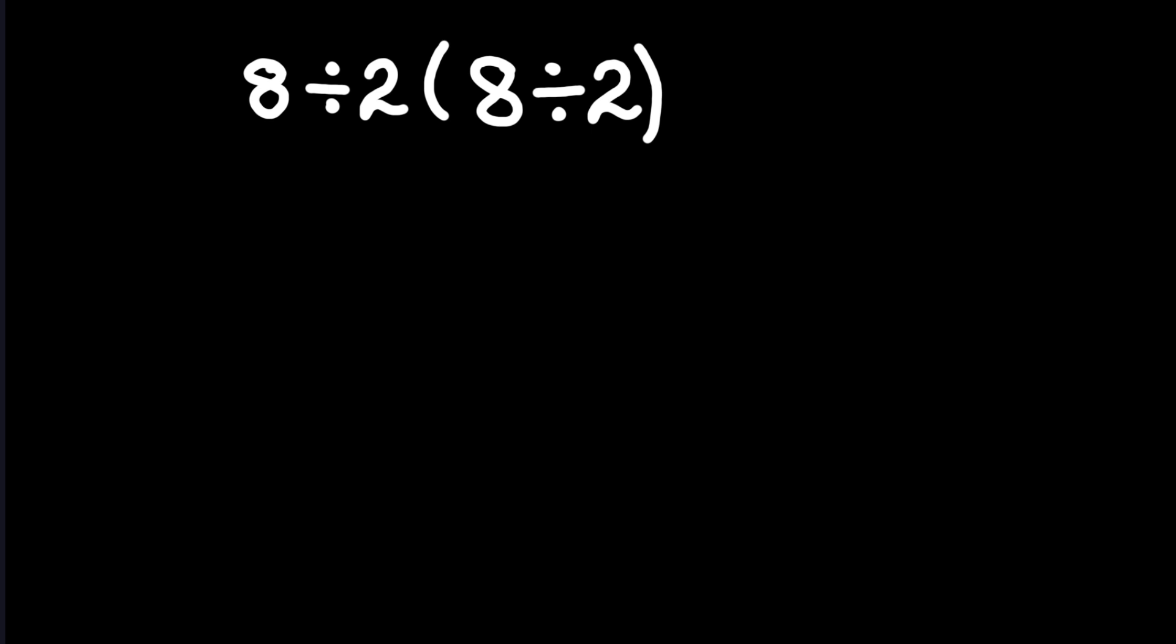Now, let's try it the quick way. Inside the parenthesis, we see 8 divided by 2. That gives us 4. So the whole thing now looks like 8 divided by 2, multiplied by 4. Here's where the big trap happens.